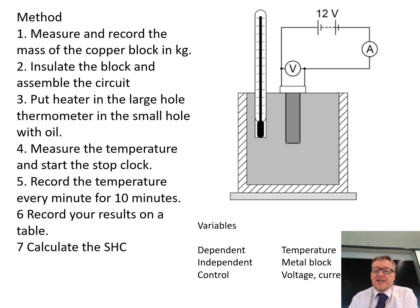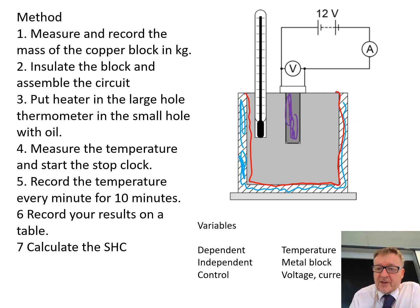So this is then the apparatus that you need to set up. So this here is your block of metal. The bit that's shaded on the outside is your insulation, just try and keep the heat in as much as you possibly can. This bit here is where you put your heater, and then obviously you've got a thermometer on the other side. This circuit here, so that is your power pack. The electricity passes through the ammeter, it then goes into the heater, it comes out of the heater, back, and then we can also do the voltage.